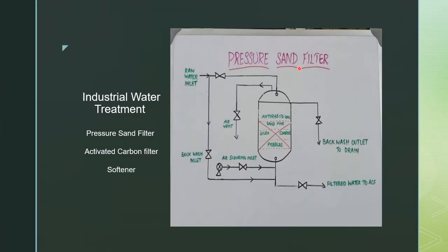The schematic diagram of the pressure sand filter shows the bed packing at 60%. The raw water inlet line has an isolation valve, the backwash line joins the outlet, and the air scouring inlet line comes from the blower. There is a vent line, a backwash outlet line, and a service outlet line going to the activated carbon filter.